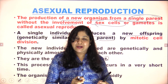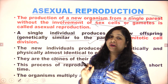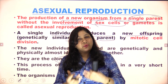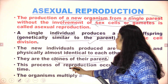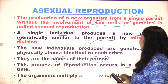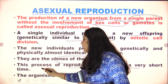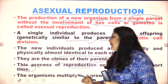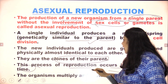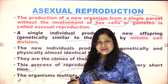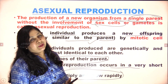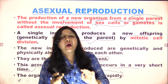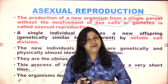In asexual reproduction, there are almost negligible or no variations. This process of reproduction occurs in a very short period of time. Asexual reproduction takes very less time and organisms multiply and grow rapidly. The definition is: the production of new organisms from a single parent without involvement of sex cells or gametes.